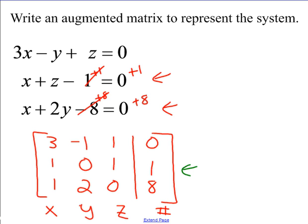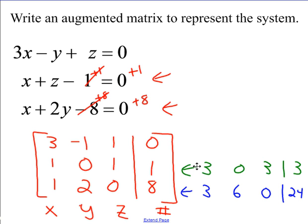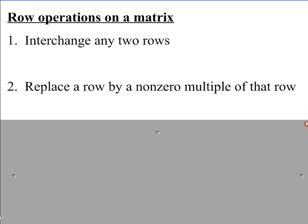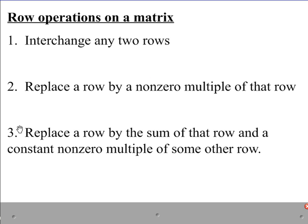So if I multiplied by 3, this row could become 3, 0, 3, and then my bar, and 3. I could do 2, I could do 5. If I did the bottom row and multiplied by 3, that row would become 3, 6, 0, bar, 24. You can always replace a row by a multiple of itself — you multiply every term in that row by that constant. Finally, our third operation is you can replace a row by the sum of that row and a constant non-zero multiple of some other row. This is similar to what we do when solving systems.